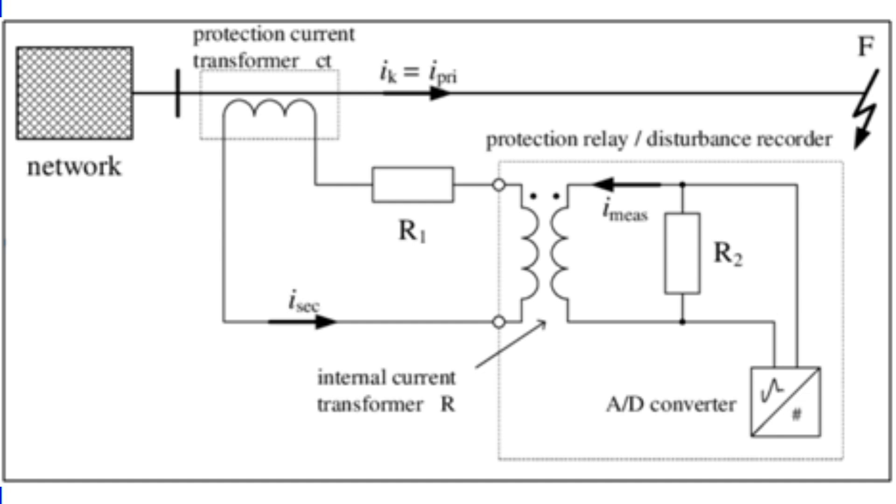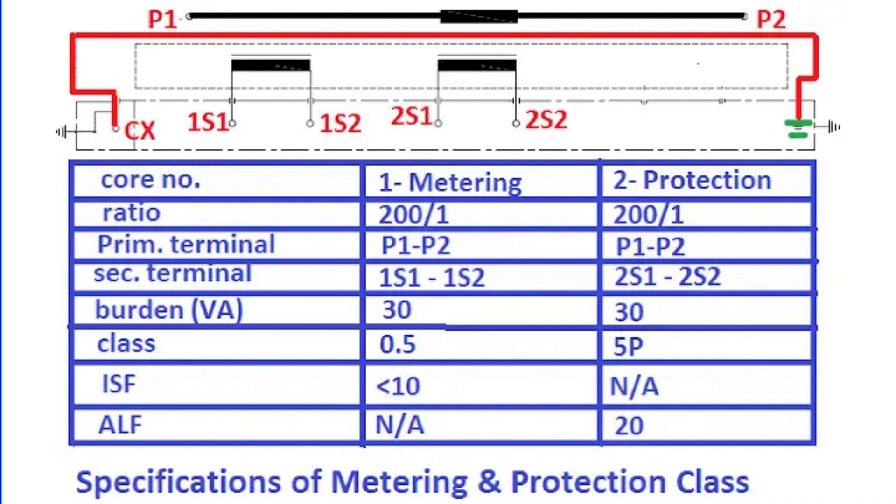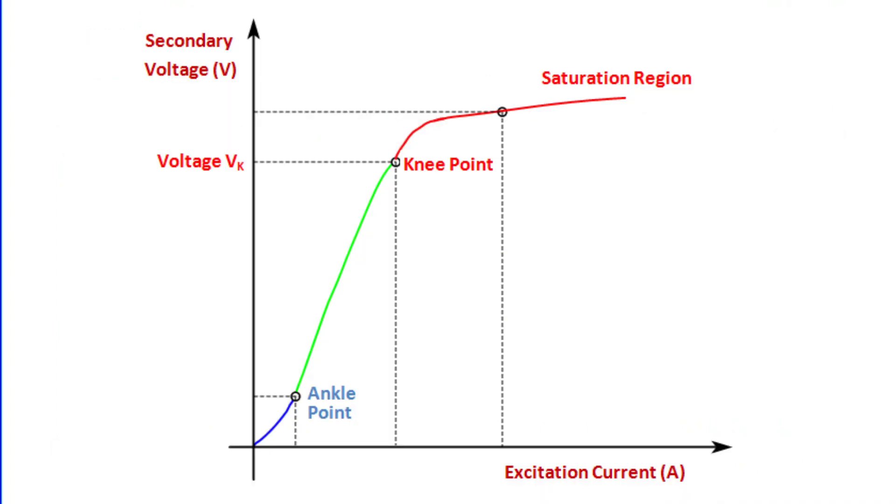This is evident from the accuracy class of protection CTs, often labeled as 5P10 or 5P20. It means the CT maintains accuracy within plus or minus 5% when the current is 10 or 20 times the rated current. Another critical feature of protection CTs is their high knee point voltage, which ensures the core doesn't saturate even during high fault currents.